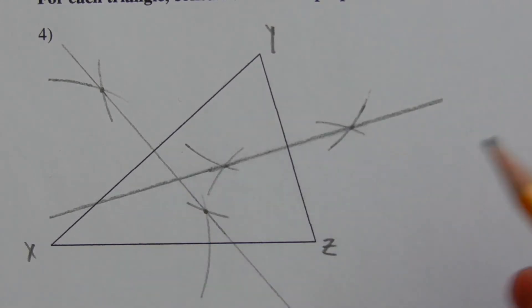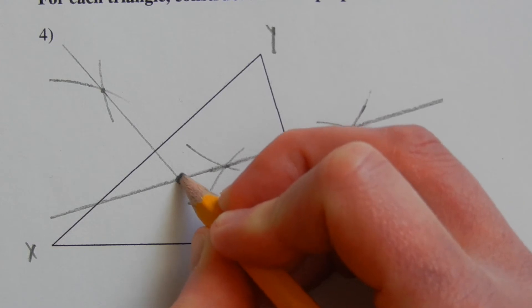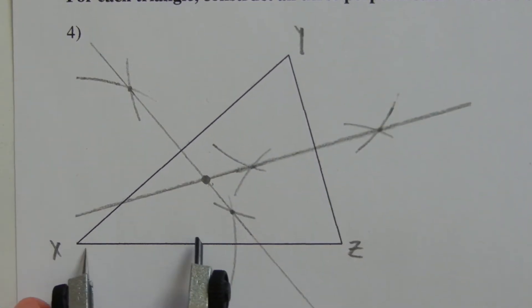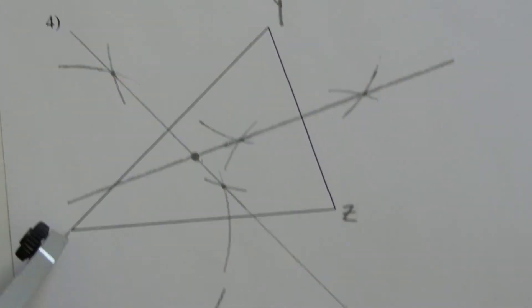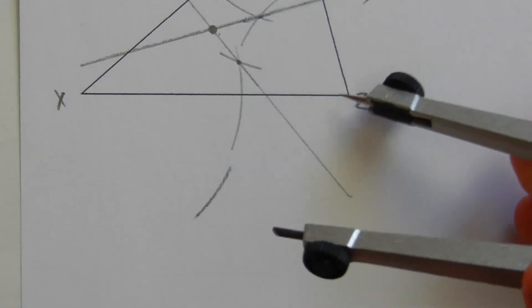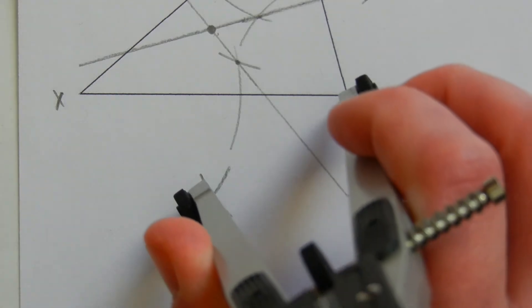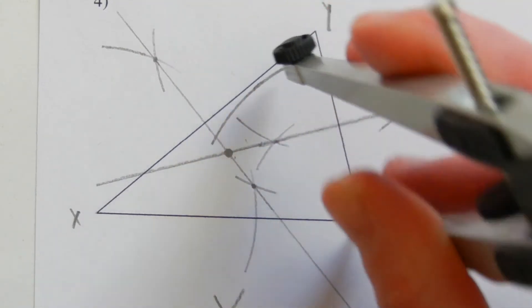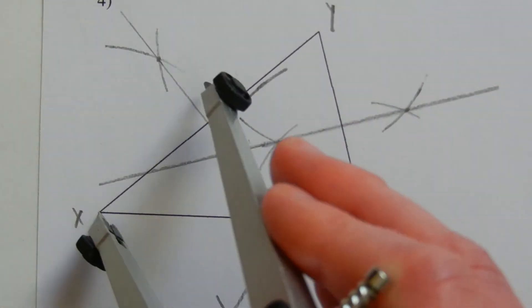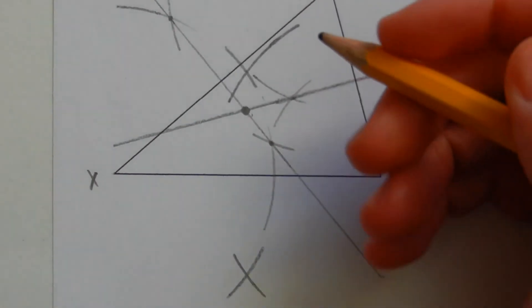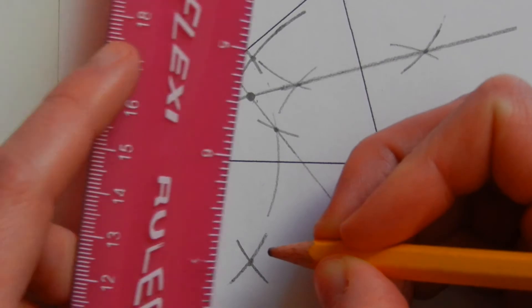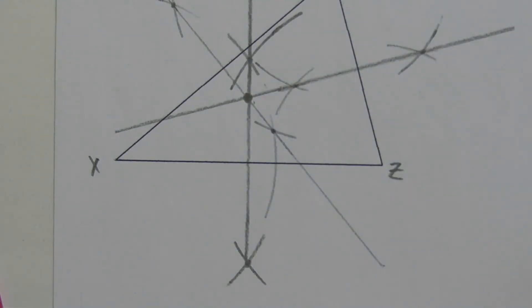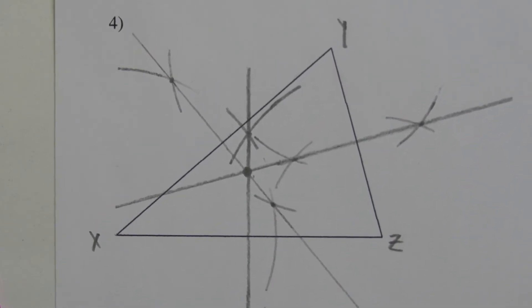Finally, I can do the perpendicular bisector of XZ. Since the three bisectors are concurrent, XZ will pass through the point where the other perpendicular bisectors already intersect. I move my compass a little more than halfway, draw marks on both sides of segment XZ from both endpoints X and Z, find those intersections, connect them, and you can see that indeed all three perpendicular bisectors intersect at the same point — the point of concurrency, which is also the circumcenter of triangle XYZ.